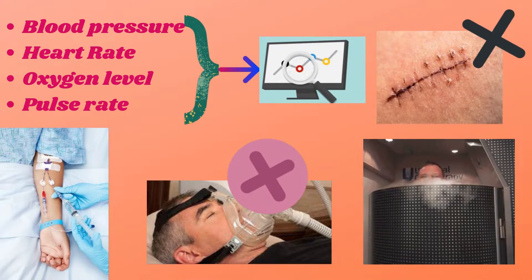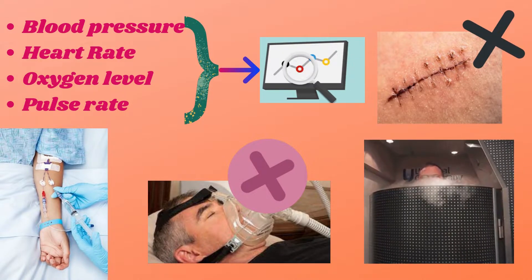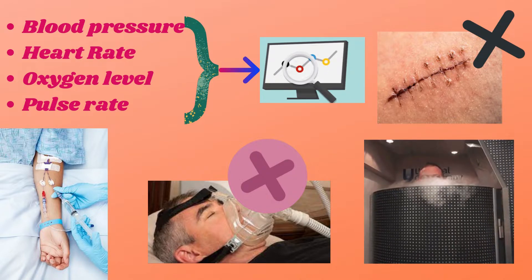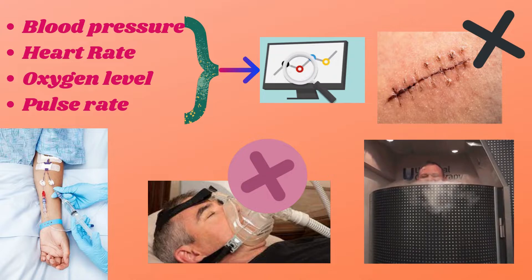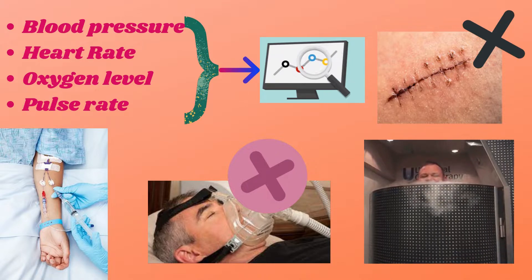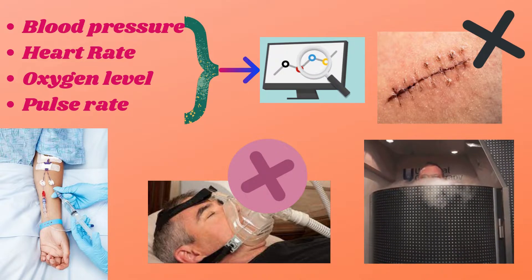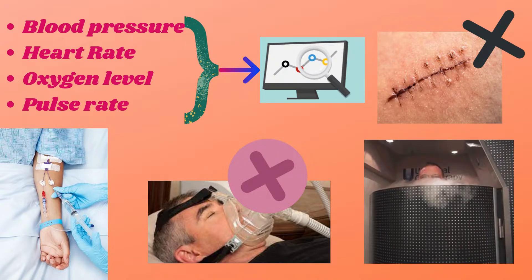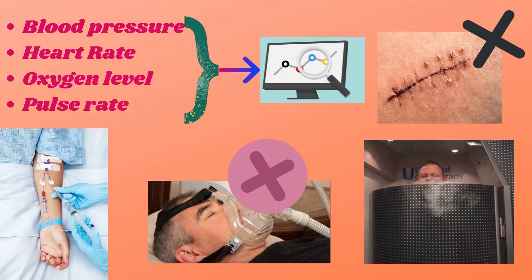Now let's see step-wise how the cryotherapy procedure is done. First, monitors are used to track blood pressure, heart rate, oxygen level, and pulse rate. The patient will be connected to the monitors. An intravenous line is inserted into a vein in the arm or hand of the patient by a technologist or nurse to administer the sedatives. Breathing tube may not be required in this process. General anesthesia is required in some patients.